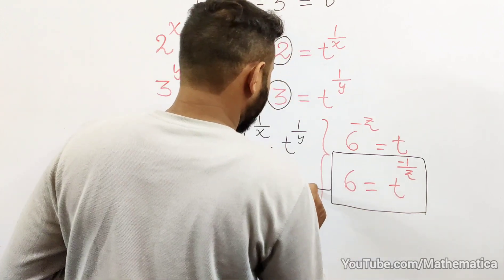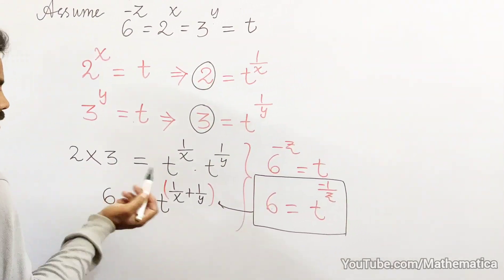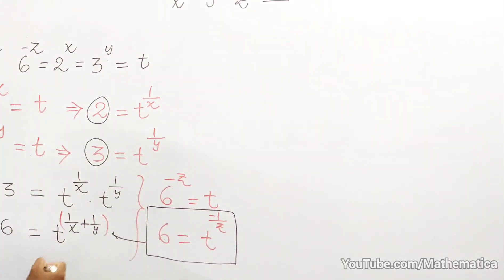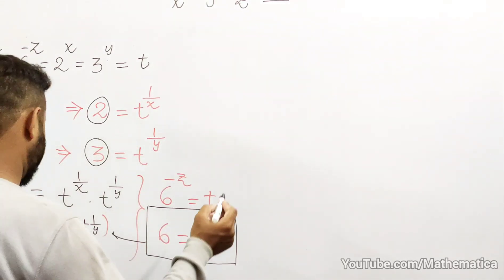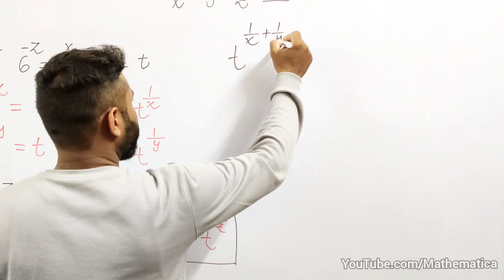I can use it here. So what I will do: 6 on both sides. From these two equations I can do t to the power 1/x plus 1/y.